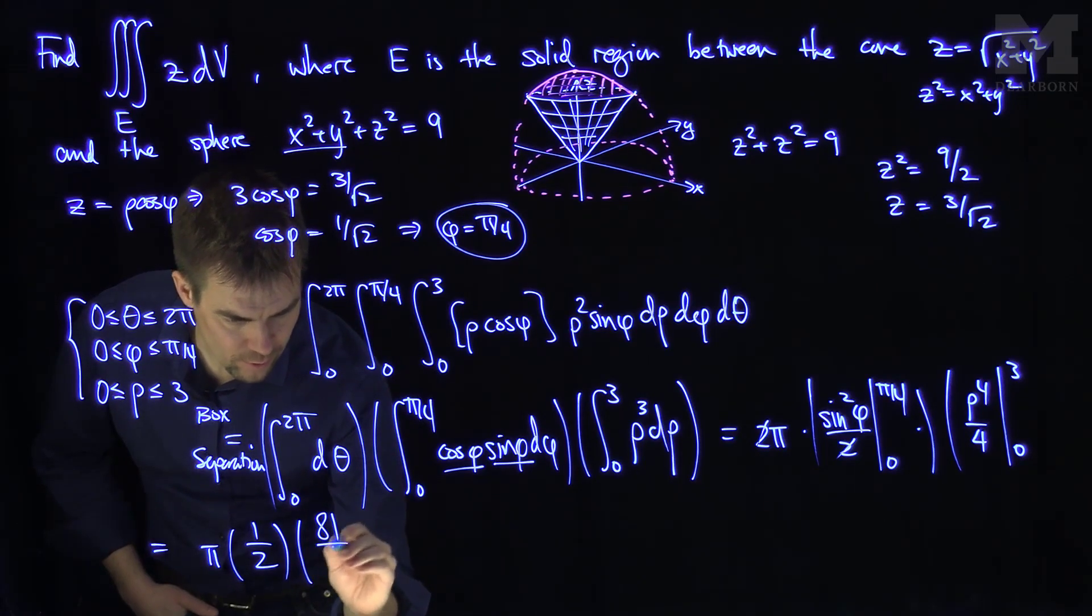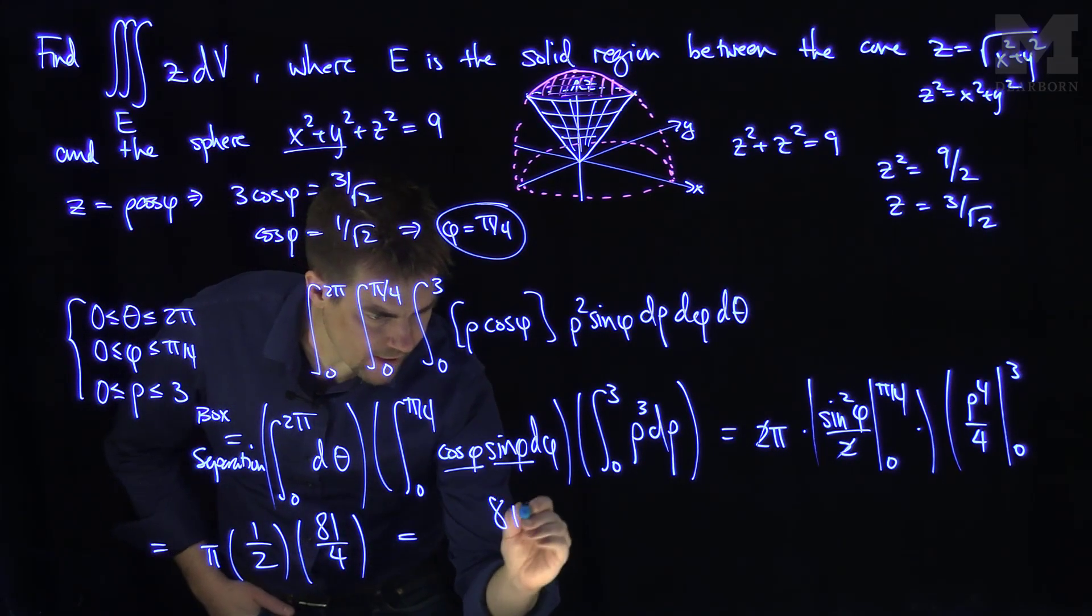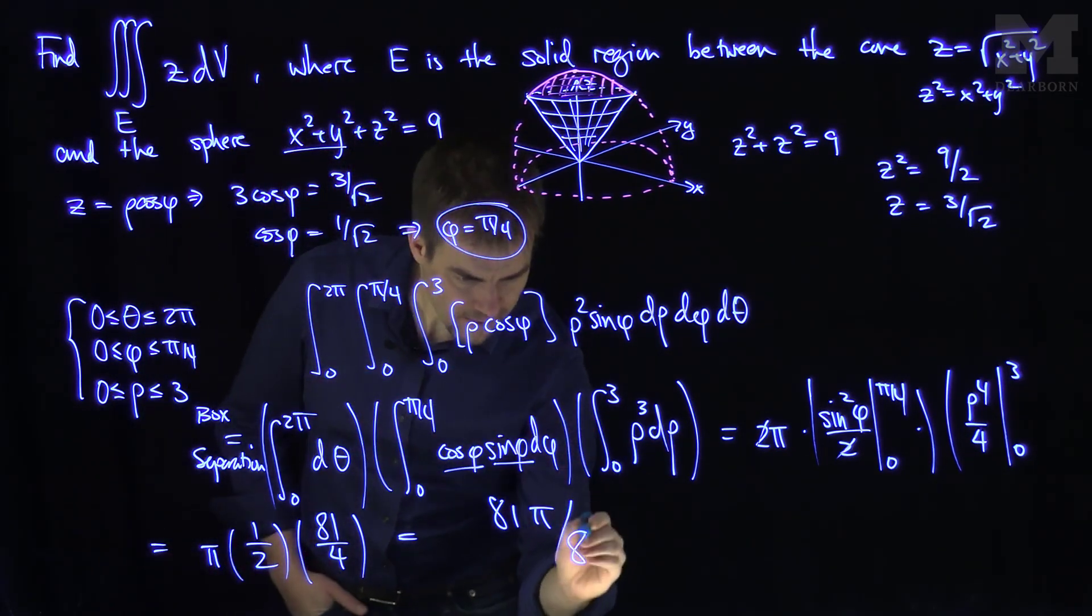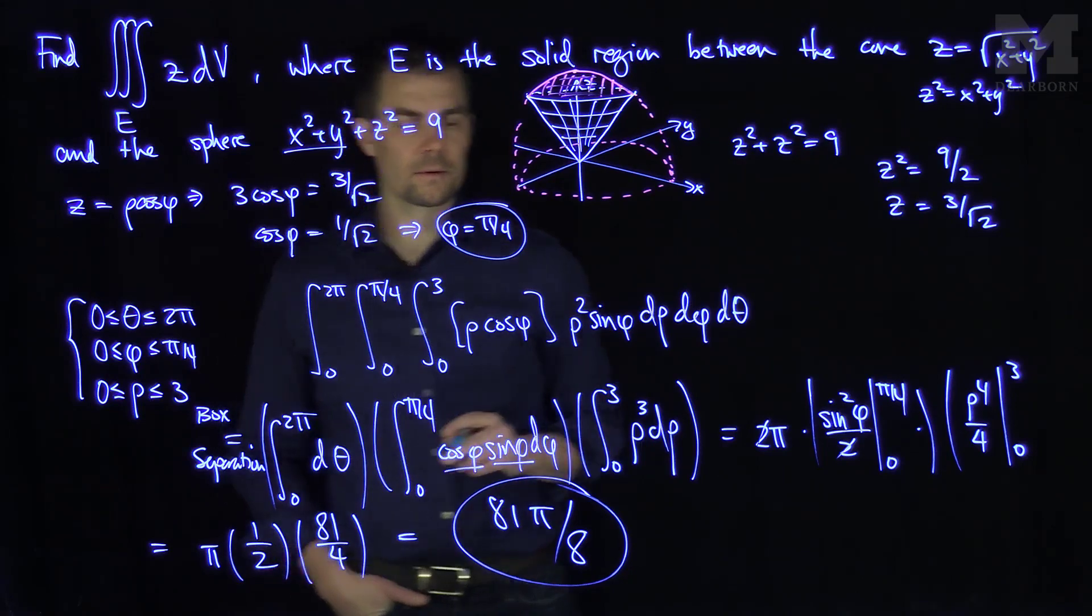so I'm going to have an 81 over 4. So if we multiply this all out, we'll get a total of 81 pi divided by 8. And there is our solution.